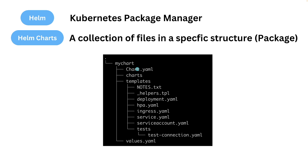A Helm chart will look like this: you have one directory which is the name of the chart itself. Inside that directory you have a chart.yaml — I'll show you what's in it — it shows the name of the chart, versions, descriptions, and can also contain dependencies in Helm 3. There's a charts directory where you can put dependencies. The templates directory contains the template YAML files for your application, like a deployment, service, ingress resource, and a horizontal pod autoscaler.